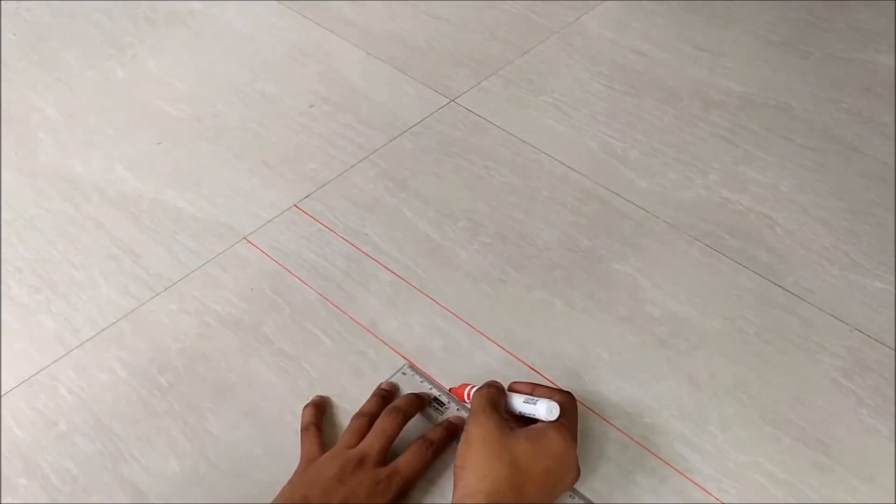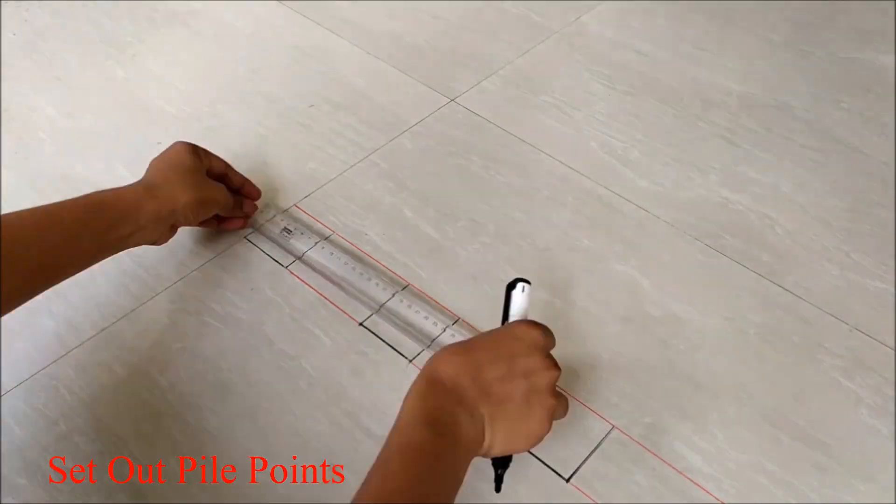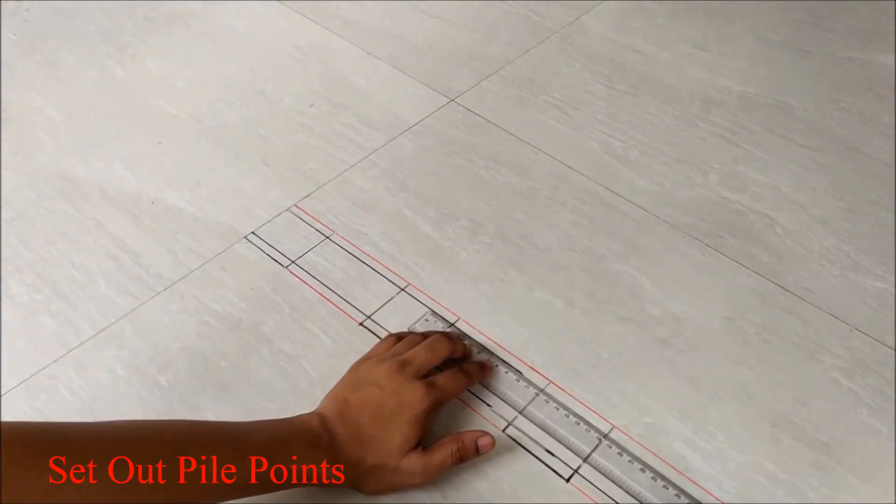Girder bridge is a bridge structure that uses girders as the means of supporting its deck. In the beginning of work, set out the pile points accurately based on the drawing available at site.